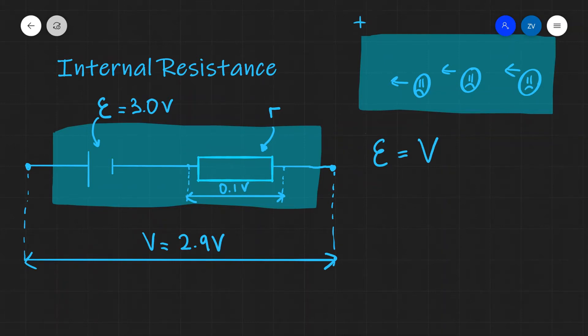I'm going to call this V_lost. So in this diagram, the lost volts would be 0.1 volts that have been lost across the internal resistor.